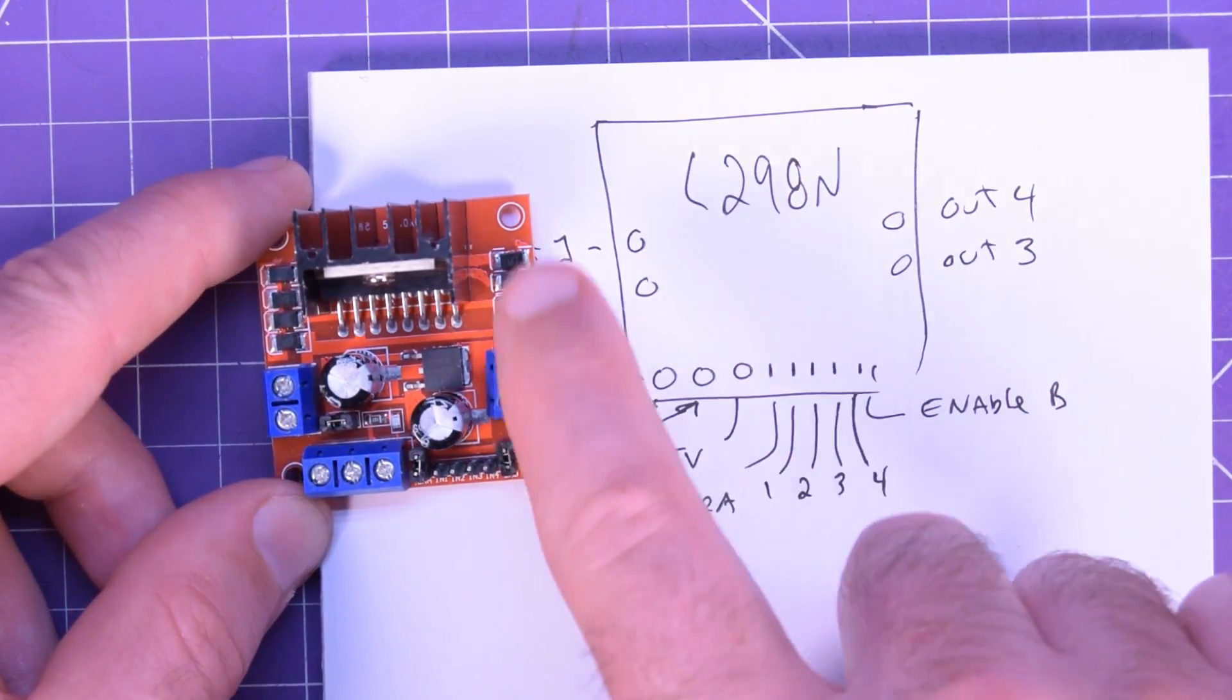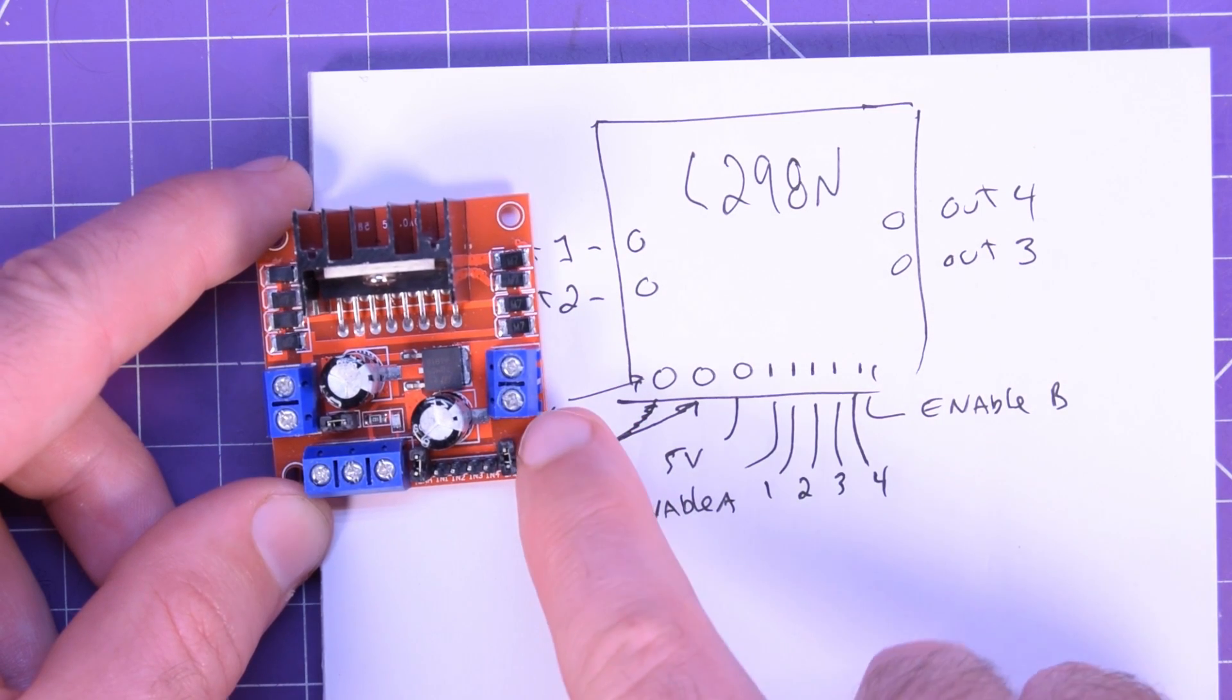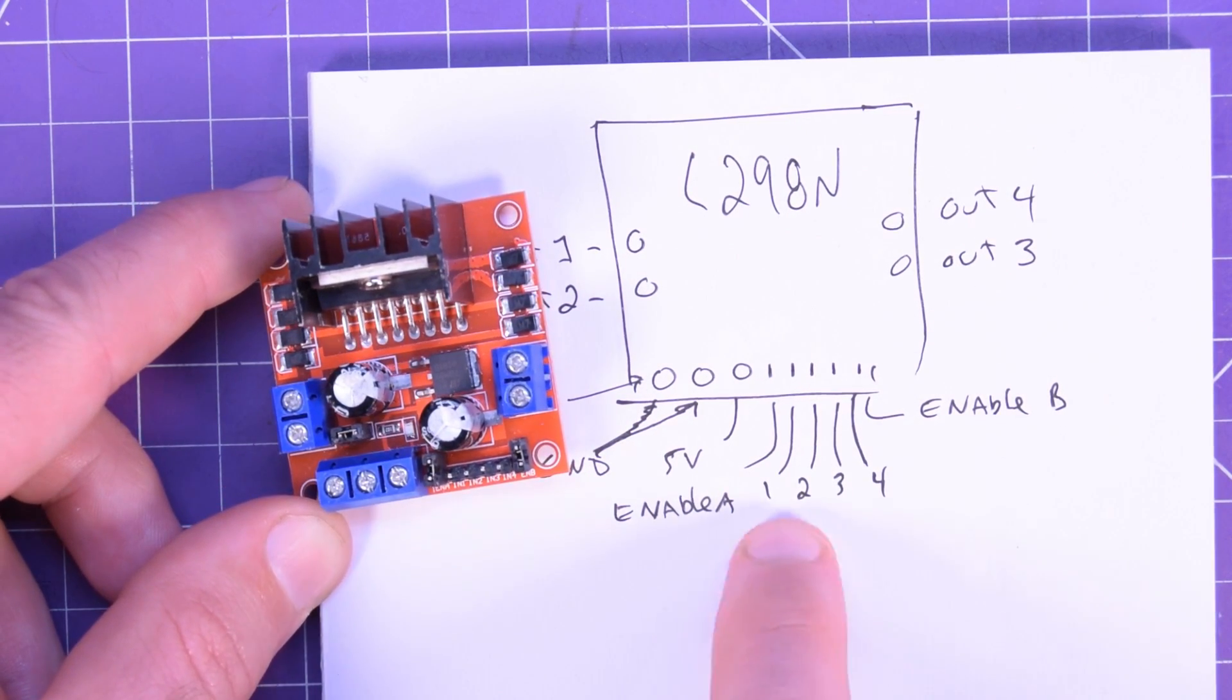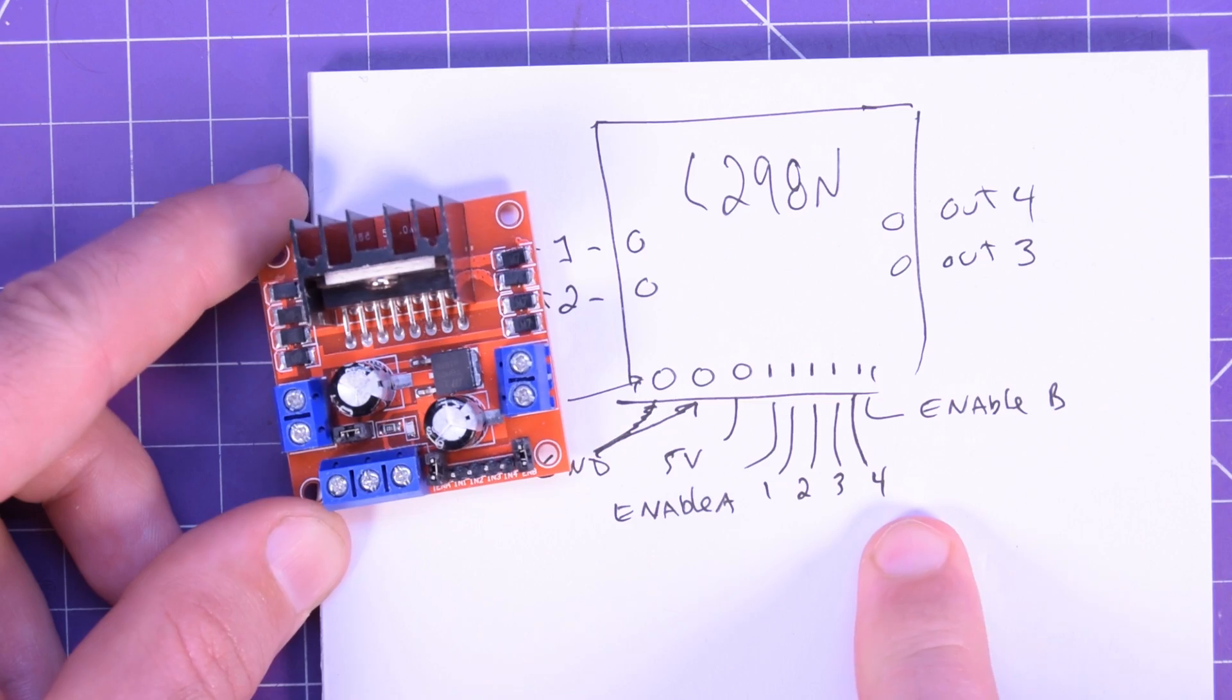Same thing on the other end, enable B. That's this output here tied high onto this jumper, and then you've got inputs 1, 2, 3, and 4.